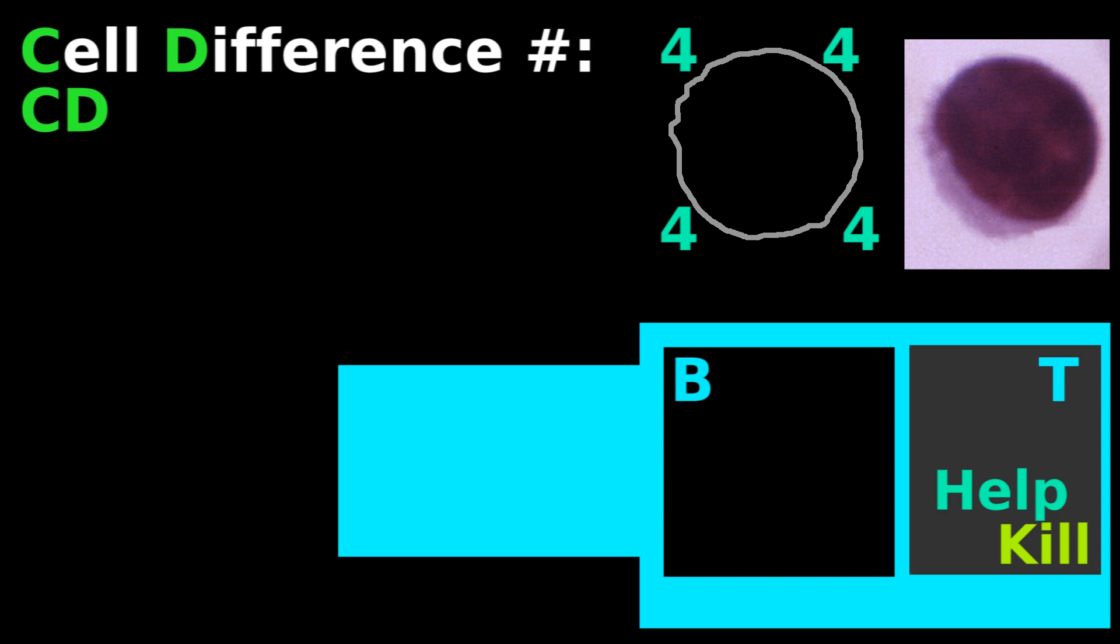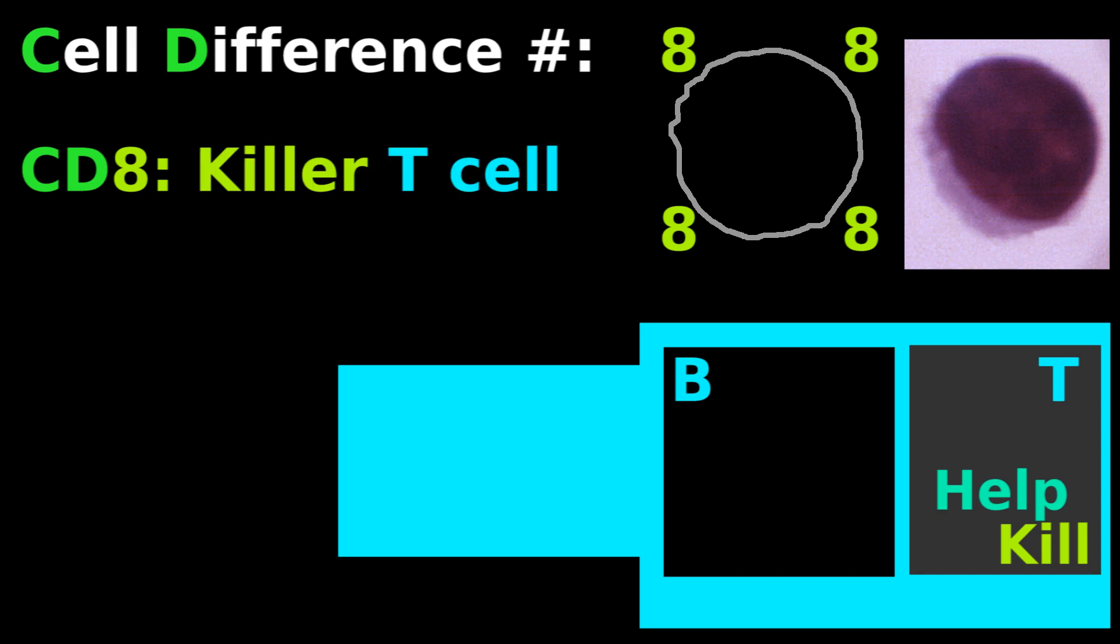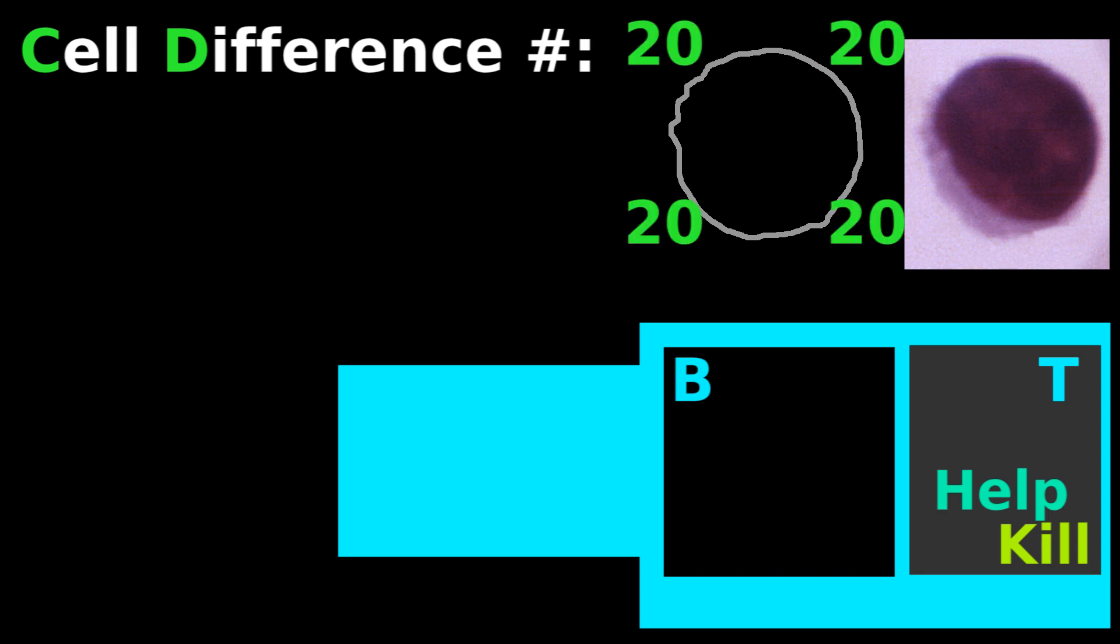If the lymphocyte has little number 4s on the surface, it's a CD4 cell, a helper T cell. If it has little number 8s on the surface, it's a CD8 cell, a killer T cell. And if it has little number 20s on the surface, it's a CD20 cell, a B cell.